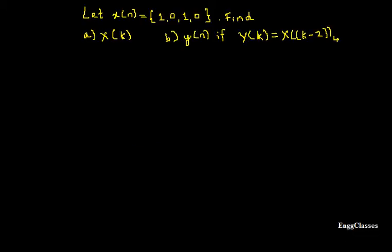Welcome to NG Classes YouTube channel. In this video we will consider a numerical wherein x of n is given. It is a four point sequence which is 1, 0, 1, 0. The task is to find its DFT x of k and to find y of n, if y of k is equal to x of k minus 2. So basically this numerical has got two parts.